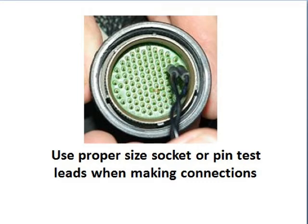When troubleshooting a wiring issue, you'll need to open one or both connectors on the harness. First step is to inspect the connector for dirt, corrosion, moisture, or other damage. Note the bent pin in this connector.